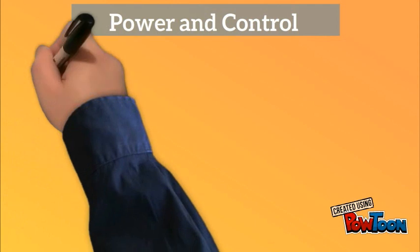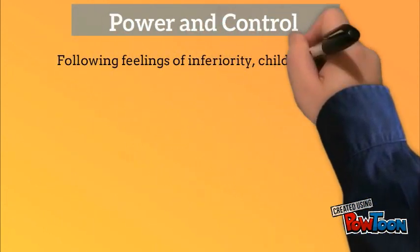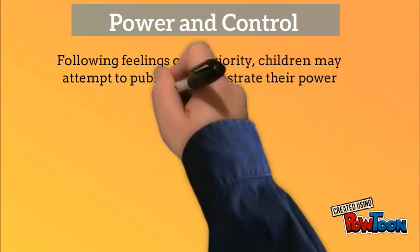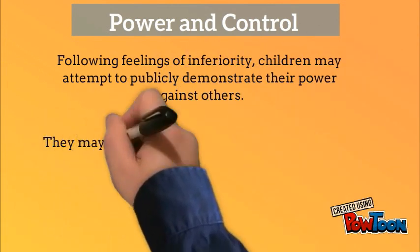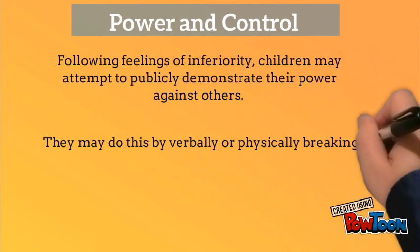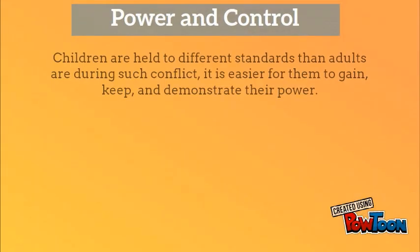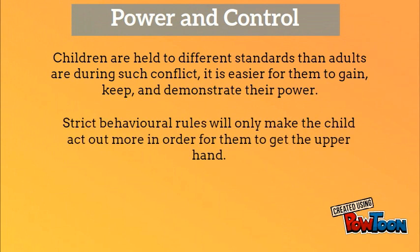For power and control, students will follow feelings of inferiority and may attempt to publicly demonstrate their power against others. They may do this by verbally or physically breaking down others' achievements. Children are held to different standards than adults during such conflict, so it is easier for them to gain, keep, and demonstrate their power. Strict behavior rules will only make the children act out more so that they get the upper hand.